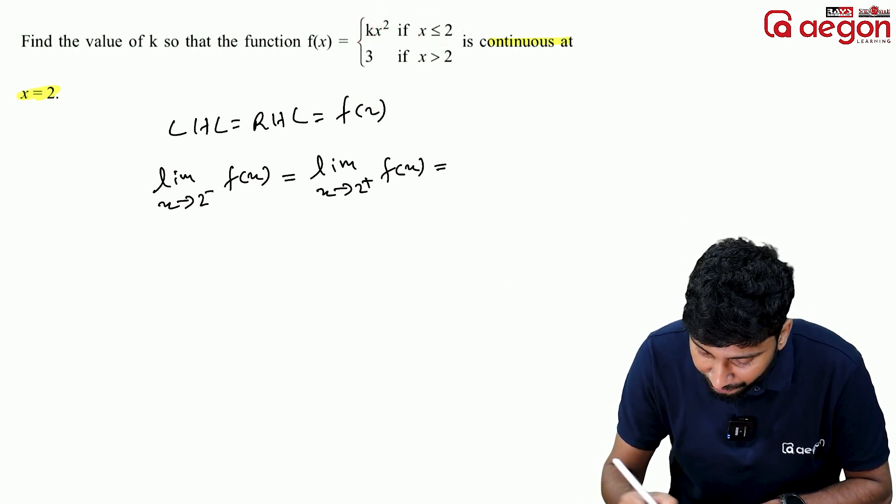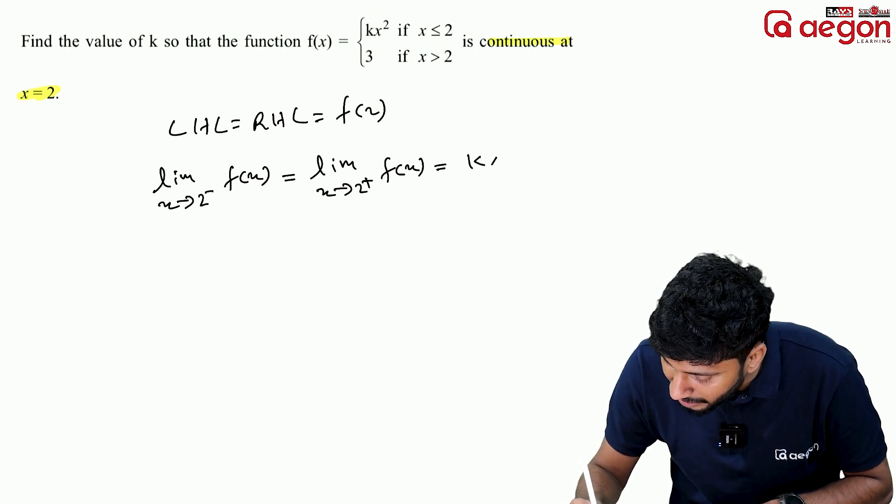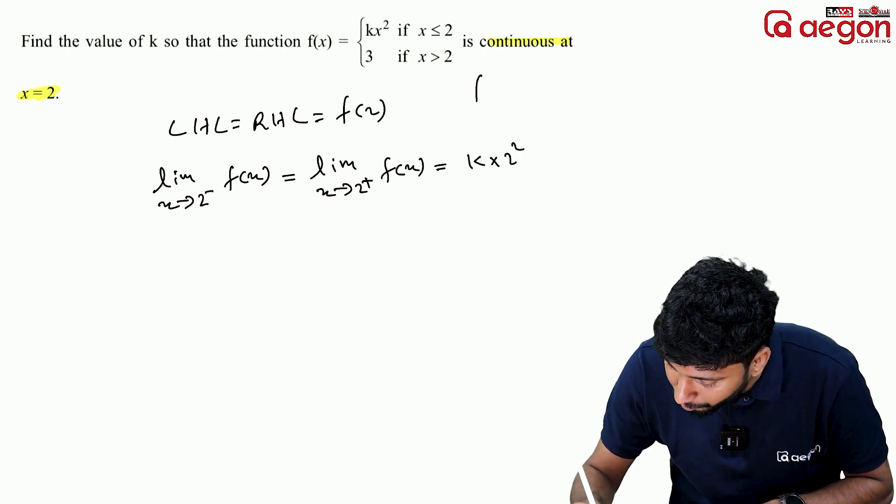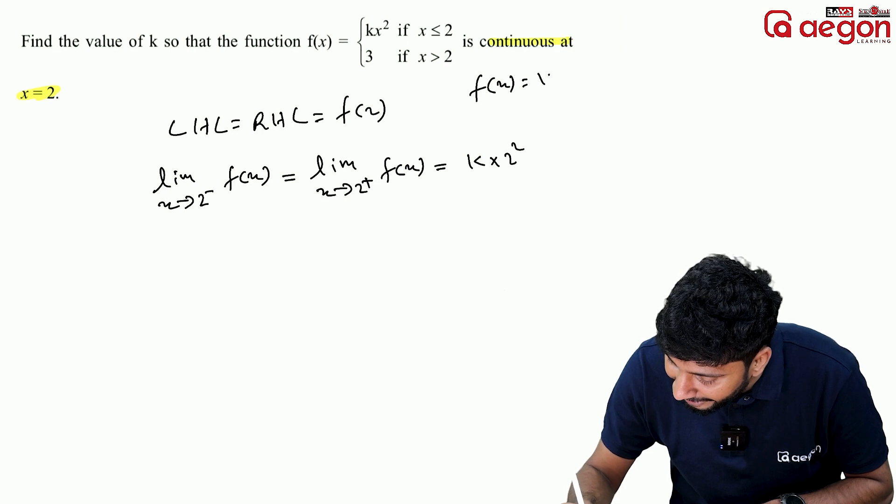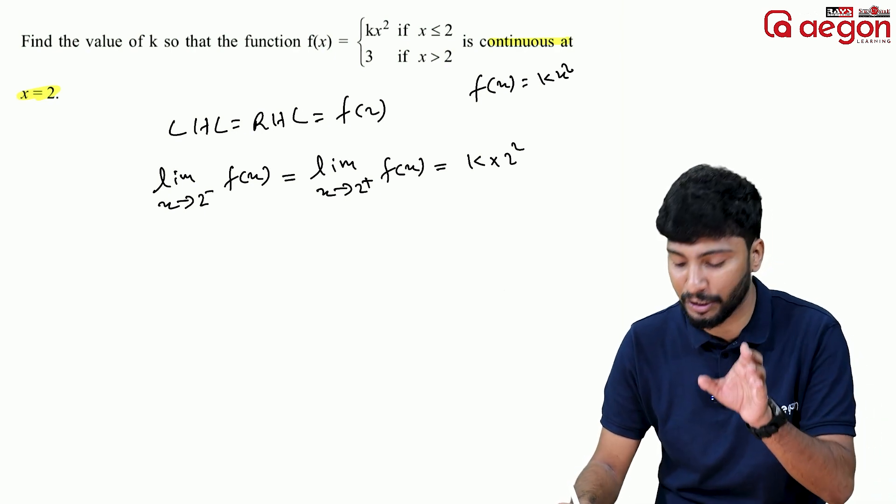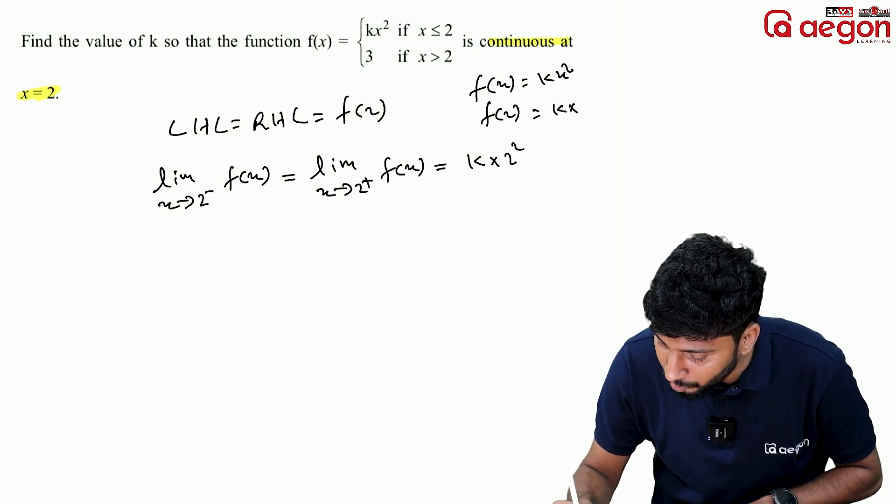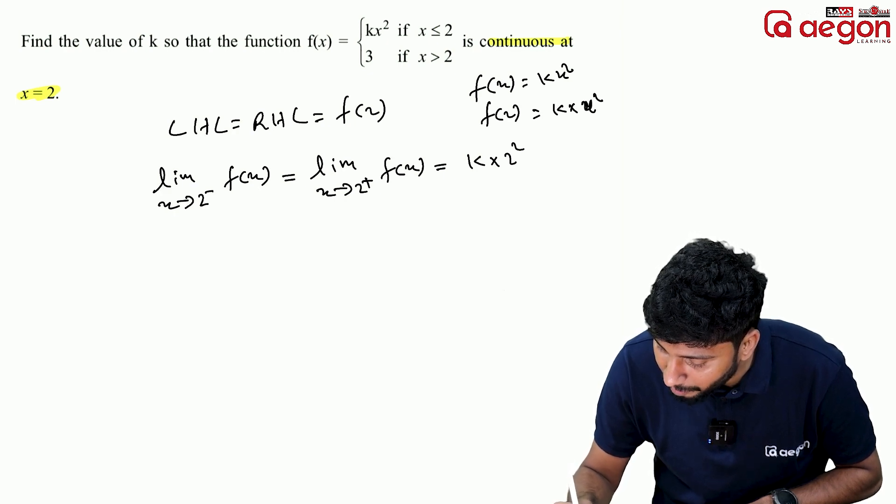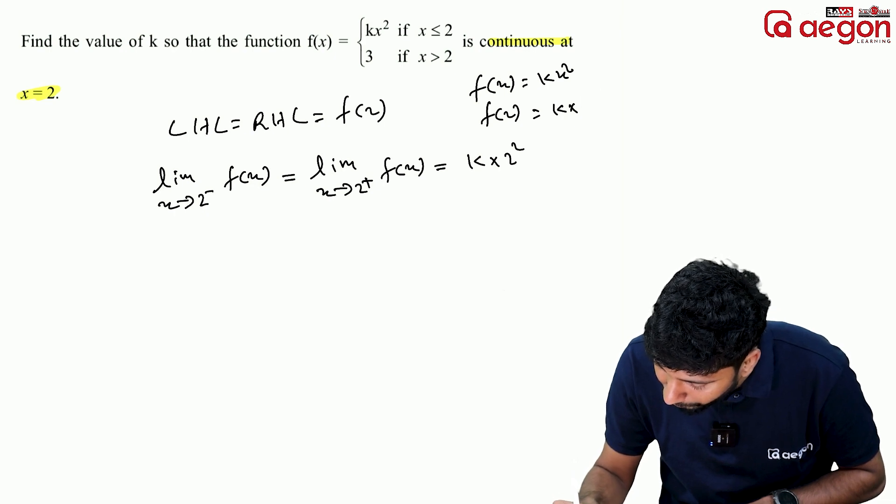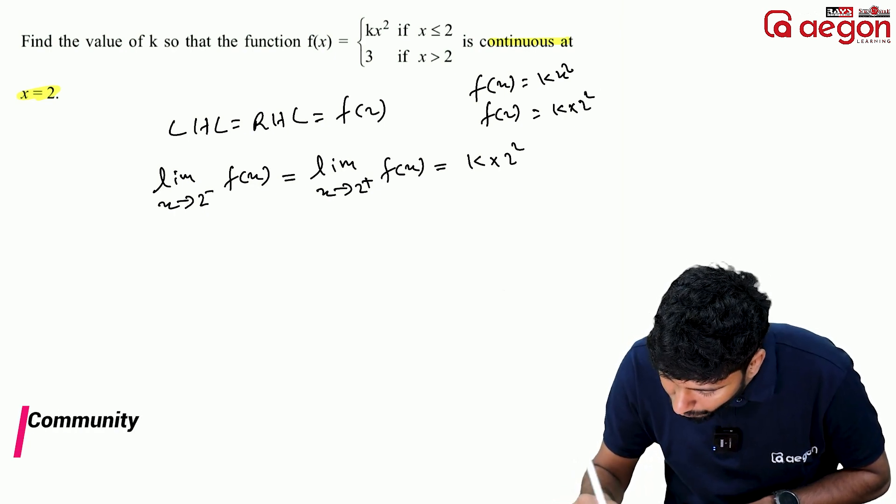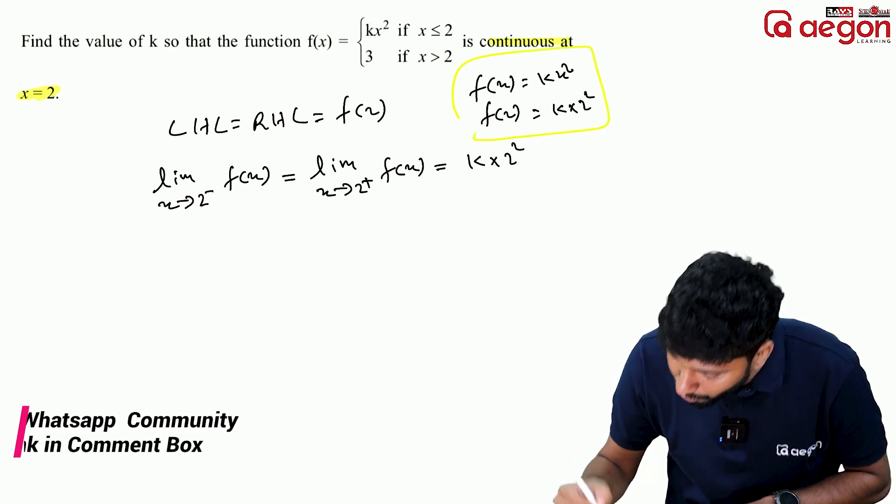The value of f of 2, when the function is kx², we substitute x equals 2, so f of 2 equals k times 2 squared, which equals 4k. So the value is 4k.